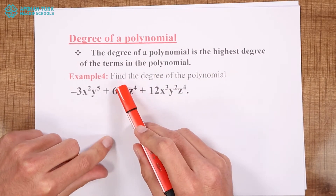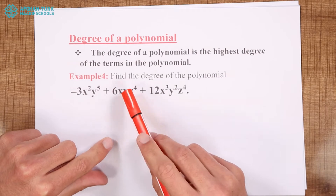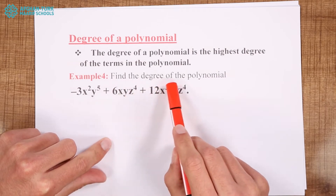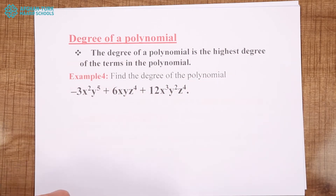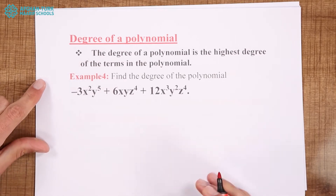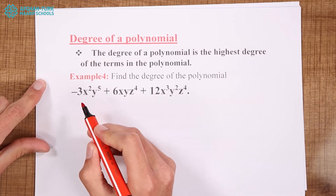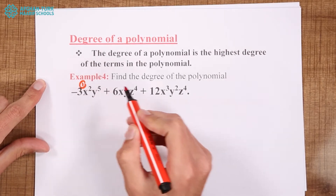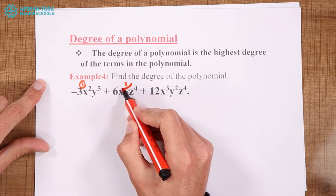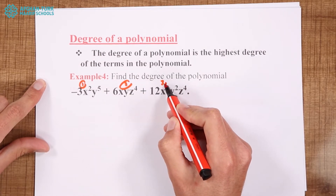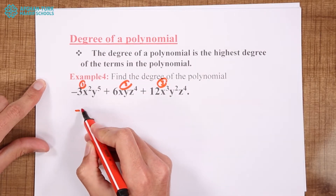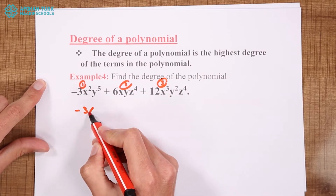For example, here we have example 4: find the degree of the polynomial. We have a polynomial and we must find the degree of this polynomial. First we must look at each monomial and the degree of these monomials. We have a first term, a second term, and a third term. In the first term we have minus 3,